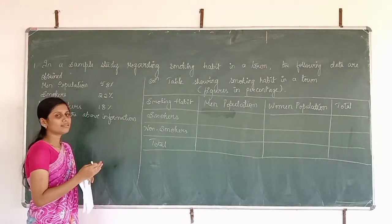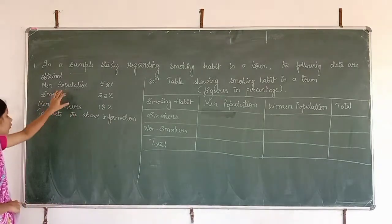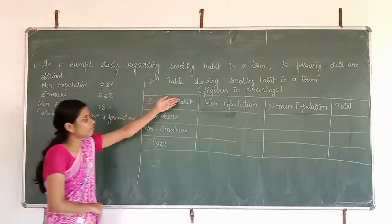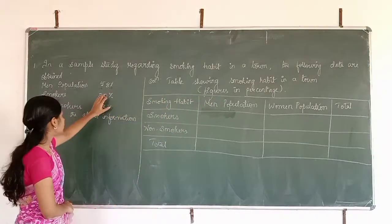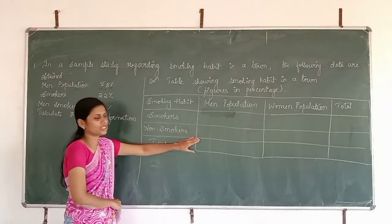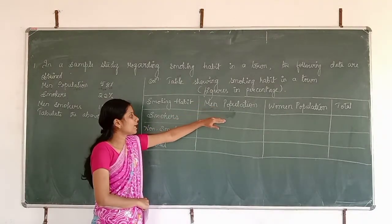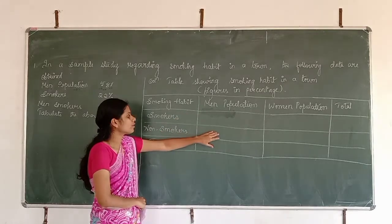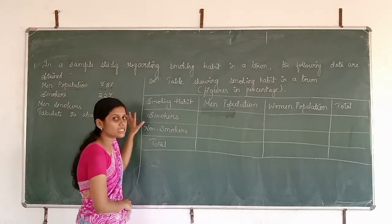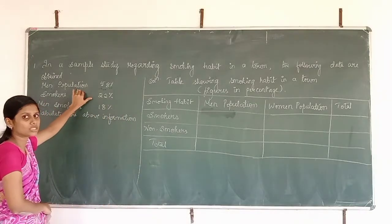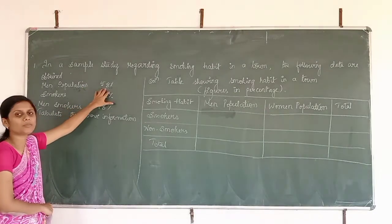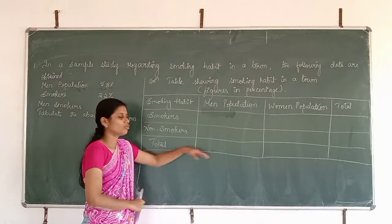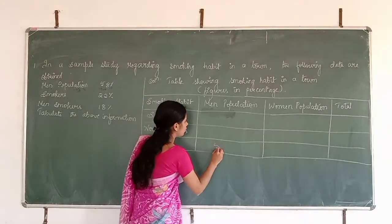Now we are going to enter the information in this blank table. The first information is men population — 58%. Since the figure is already noted in percentage, we write 58 in the total row of the men population column. That is, total men population is 58.